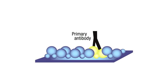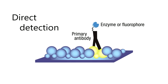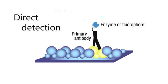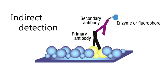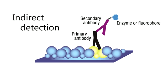This protein can be detected in one of two ways, either directly detected by using a primary antibody that is conjugated to a detectable enzyme or fluorophore, or indirectly detected by using a labeled secondary antibody that binds to the primary antibody.